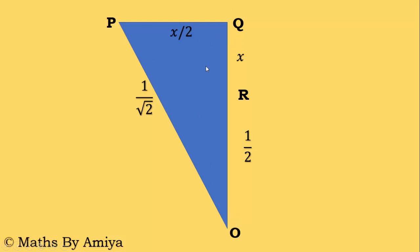And we know this is a right angle triangle, so we apply the Pythagoras theorem. PQ squared plus OQ squared equals OP squared. OP is 1 by root 2 squared equals x by 2 squared plus x plus 1 by 2 whole squared. By solving this we will get x equals minus 1 or 1 by 5.